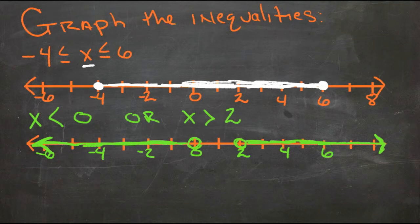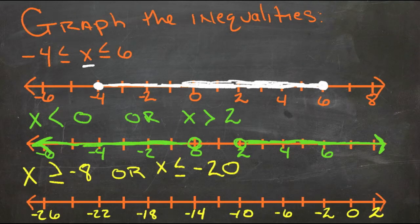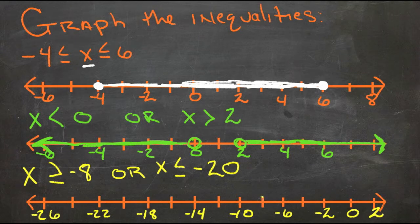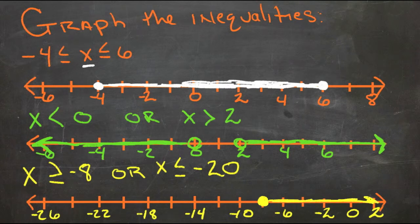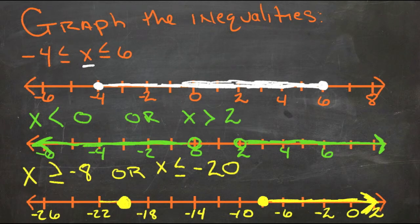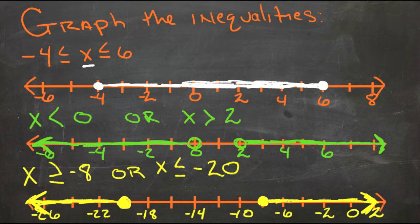In example 3, X is greater than or equal to negative 8, so we start at negative 8 with a filled circle and shade to the right. Or X is less than or equal to negative 20, so it can be negative 20 or anything smaller. So X can be anything negative 20 or smaller, or negative 8 or bigger.